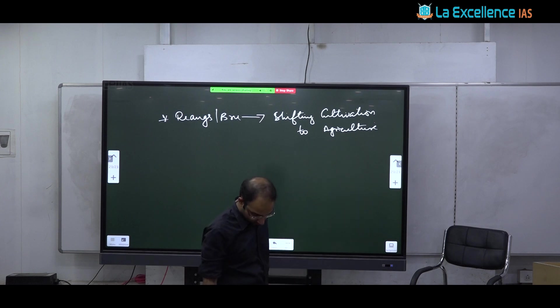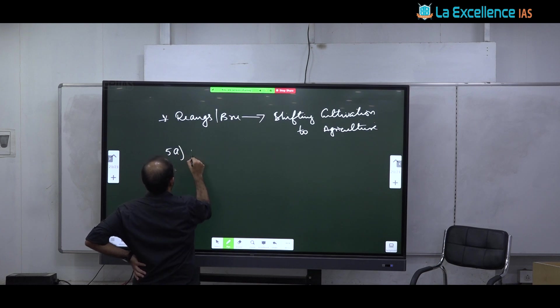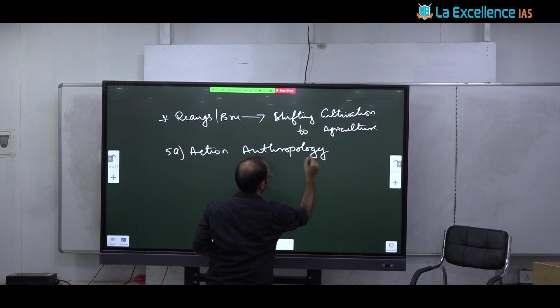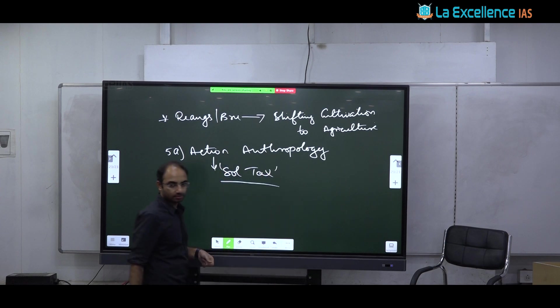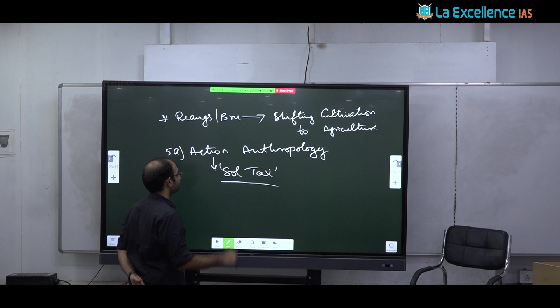How government in Tripura has taken measures to shift these people from this kind of agriculture to this kind of agriculture to proper full-fledged agriculture. You can also write that. And I posted an article. You can use that to substantiate your answer. 5A, action anthropology. So action anthropology is very different from applied anthropology. And nobody wrote this word. This term was coined by not L.P. Vidyardhi, but one American anthropologist called Salt Axe.